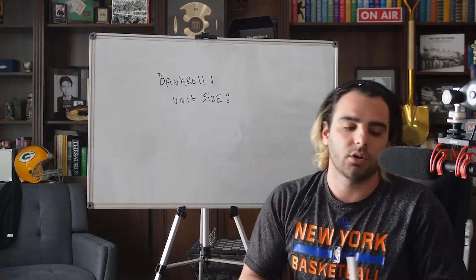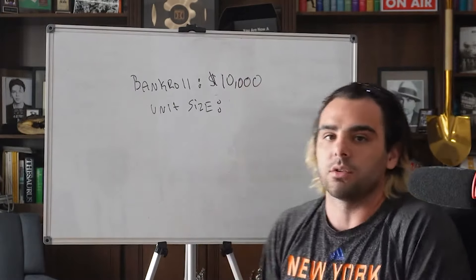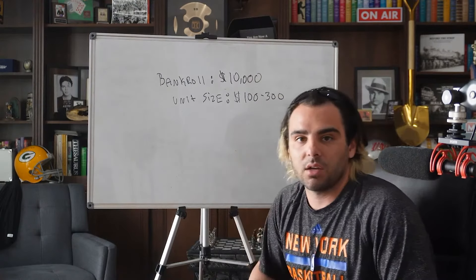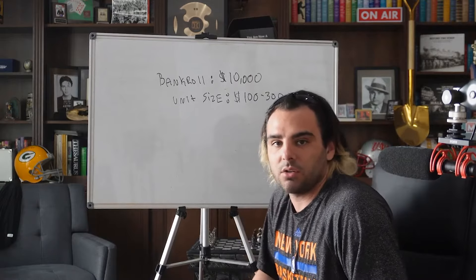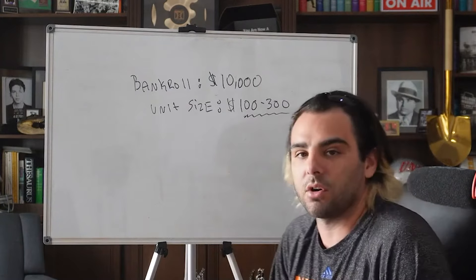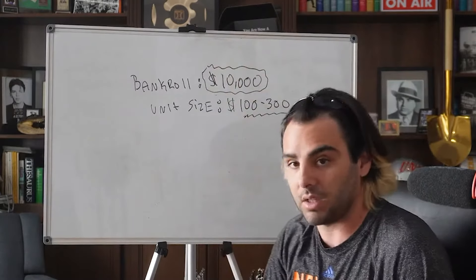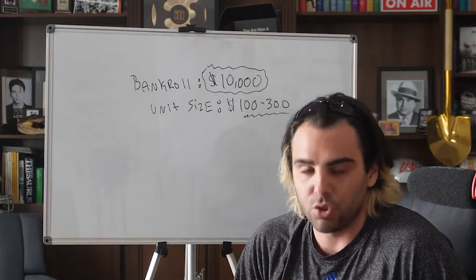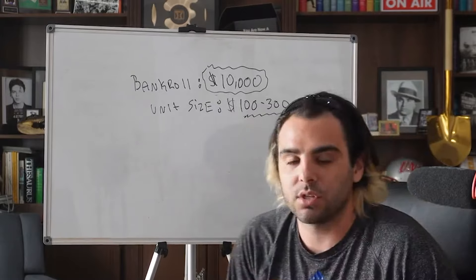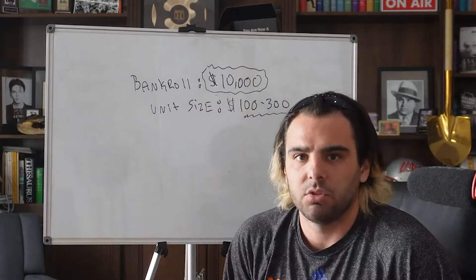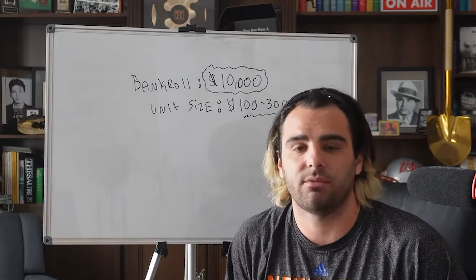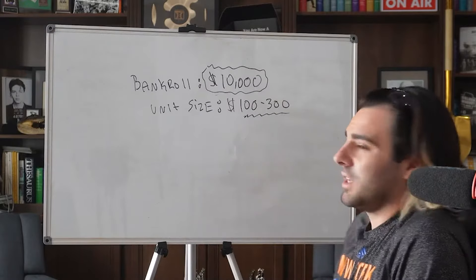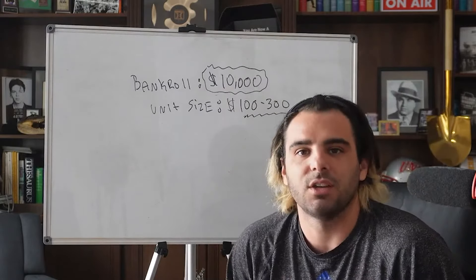If you want a couple hundred dollars as your unit size, you need a $10,000 bankroll. At one to three percent of $10,000, your unit size is $100 to $300. How many of you are betting in that bracket without anywhere near a $10,000 bankroll? A lot. Doing that puts you in a hole — a bad day going 0-and-5 at $200 a game shatters your entire bankroll.